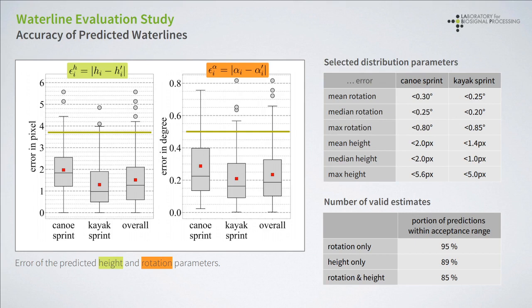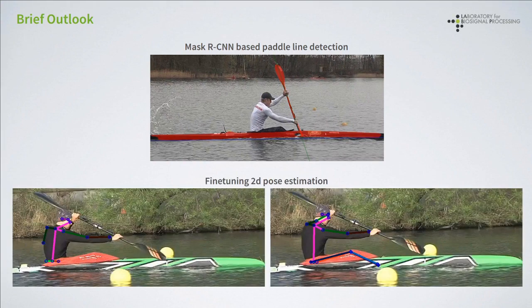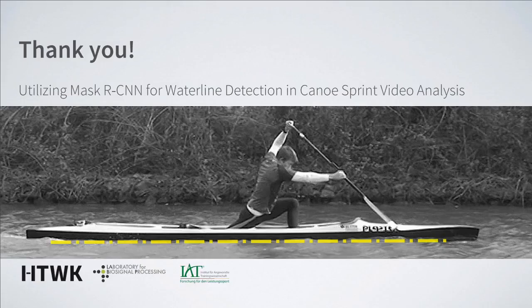It is now of particular interest to also automatically determine the other components required for kinematic parameter analysis. We applied this approach to the problem of paddle line detection, where the paddle itself is now part of the segmentation stage, and obtained very promising preliminary results on a small dataset. We also applied the approach to pose estimation and retrained the network with discipline-specific poses from a small training set — the fine-tuned net detects particular occlusions much better than the standard net. An additional transformation step is necessary to align automatic pose estimation results with the anchor points used in today's manual analysis. Thank you for listening.